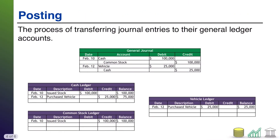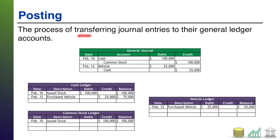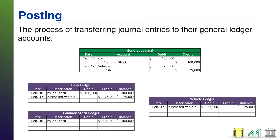Now let's talk posting. The ledger is the collection of all the individual account ledgers, and those account ledgers have the activity for a particular account in them. How do you get the activity for, say, cash into the cash ledger? That process is known as posting — this is where we transfer the activity from a journal entry to the accounts that were affected by that journal entry.